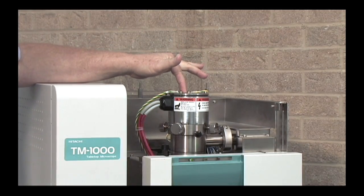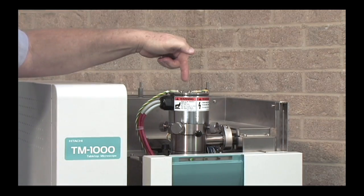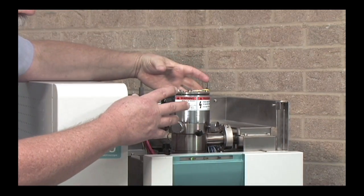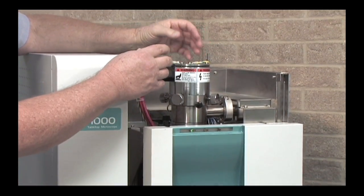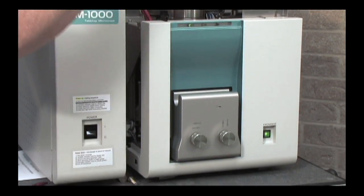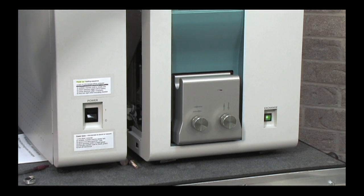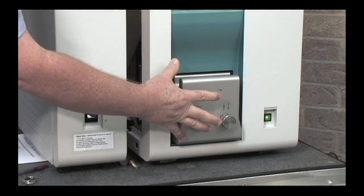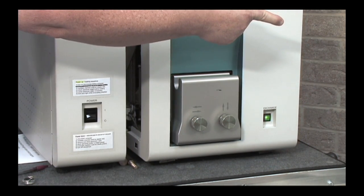So how does it work? The electron gun is located right in here. It shoots a beam of electrons straight down through this column. Around the column are electromagnets which focus the beam on the specimen which is located in this chamber. When the electrons hit the specimen they're reflected off and picked up by detectors inside this chamber and that forms our image on the computer.